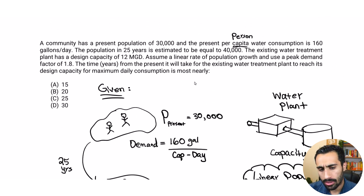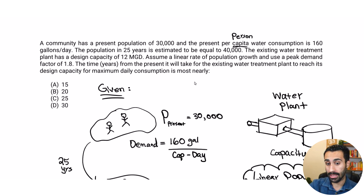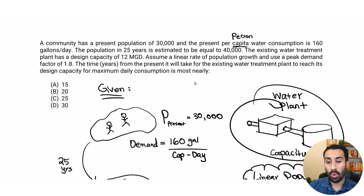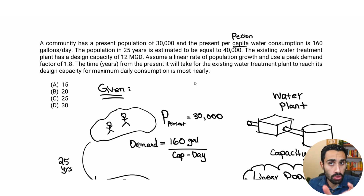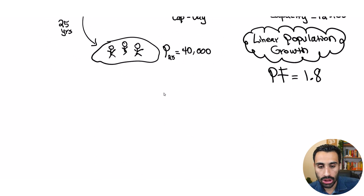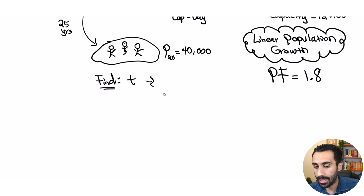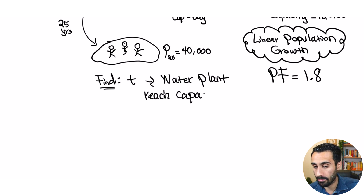The time in years from the present — notice the present population is 30,000 — the time from the present it will take for the existing water treatment plant to reach its design capacity for maximum daily consumption is what we want to find. We want to find a time t where the water treatment plant reaches capacity.